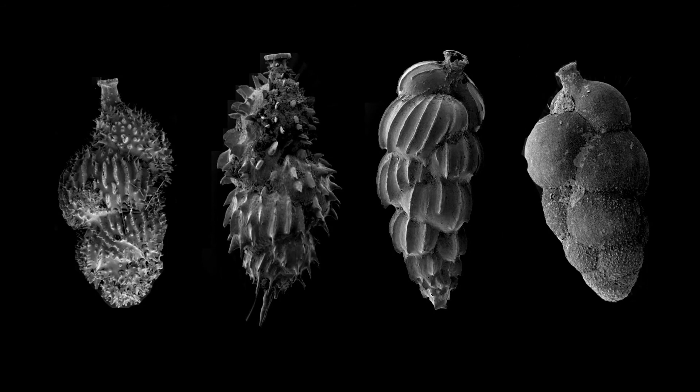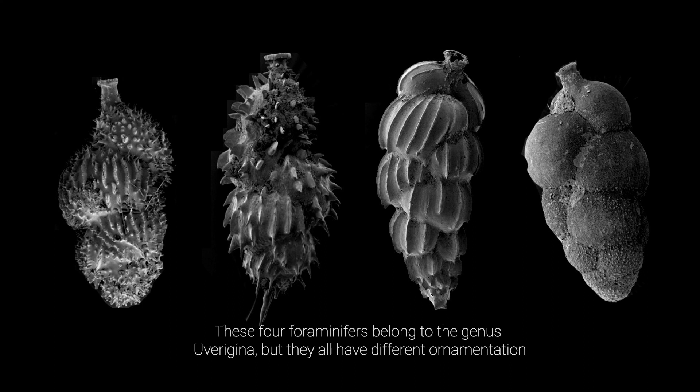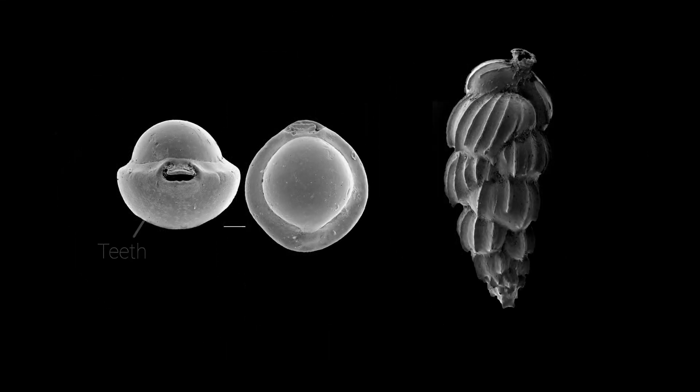Foraminifera have a great deal of morphological variation, especially given they are single-celled organisms. As you learn to notice and identify these different shapes and forms, you may also notice differences in ornamentation that can help you identify different genera and species. Sometimes the aperture will be set on the end of a neck that extends out from the chamber wall, or if you look down into the aperture you will see small projections or teeth. You may also notice ridges and bumps on the chamber walls that help you recognize the genus or species. Keep an eye out for those details as you explore the morphology of foraminifera and use their morphology to decode ancient environments.